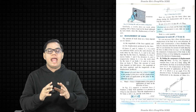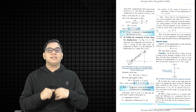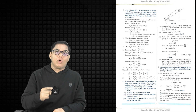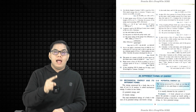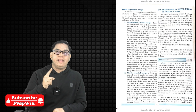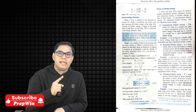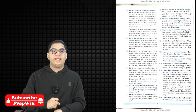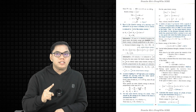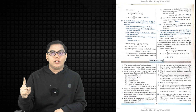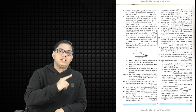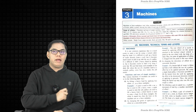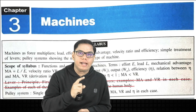Chapter 2 Work, Energy and Power has no deduction. As per the revised syllabus the entire chapter remains as it is. Please note that derivations in these chapters are included. For example, the derivation of kinetic energy equals half mv squared — you have to learn it. Also, the derivation that potential energy plus kinetic energy equals a constant is very, very important in this chapter.